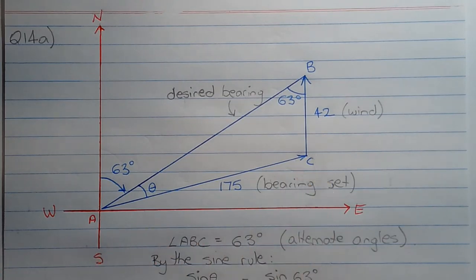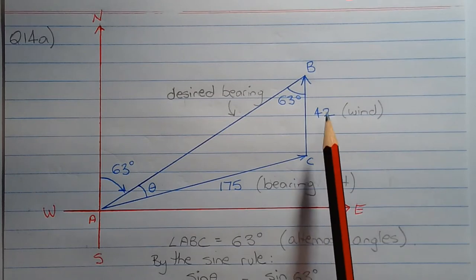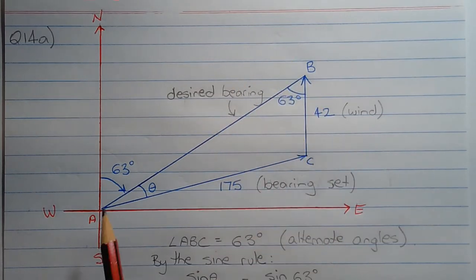And vector AC represents the bearing that needs to be set in order to compensate for the wind pushing against the plane, which will be 63 degrees plus theta degrees.